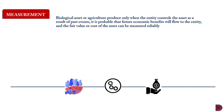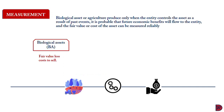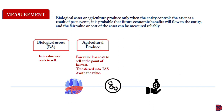Let's look at the measurement of biological assets. We recognize biological assets or agricultural produce only when the entity controls the asset as a result of past events, it is probable that future economic benefits will flow to the entity, and the fair value or cost of the asset can be measured reliably. If you remember this definition, it is that of an asset. Biological assets are measured at fair value less cost to sell. Agricultural produce is measured at fair value less cost to sell at the point of harvest. When this value is obtained, it is treated as inventory that is transferred to IAS 2 and measured subsequently. So agricultural produce is outside the scope of IAS 41.